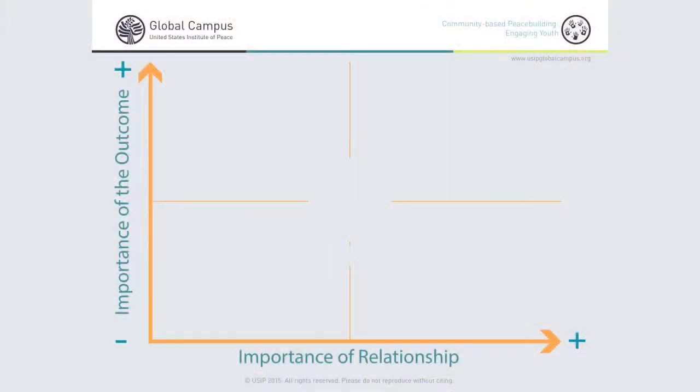Now that you've taken the conflict styles assessment, I'd like to talk about what these different styles mean. For those of you who haven't thought about math in a couple of decades, I'm going to invite you to take a look at this graph, in which we plotted the five styles. On the horizontal axis we have relationships, on the vertical axis we have outcome.